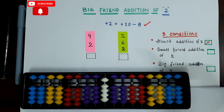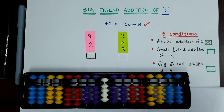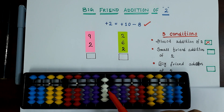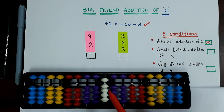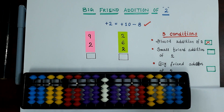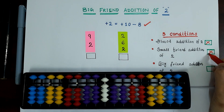Now we have to check the second condition, which is small friend addition of 2. Can we apply the small friend addition of 2 here? No, because we don't have the upper bits available — we have already used the upper bits. So small friend addition of 2 is also not possible.